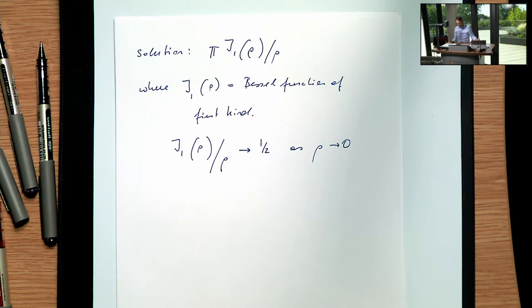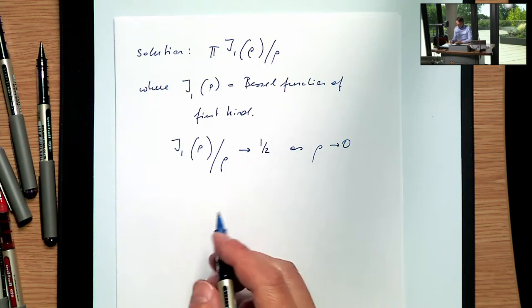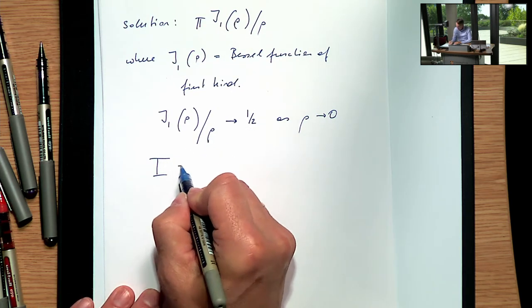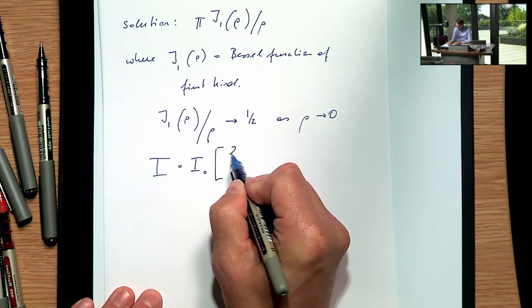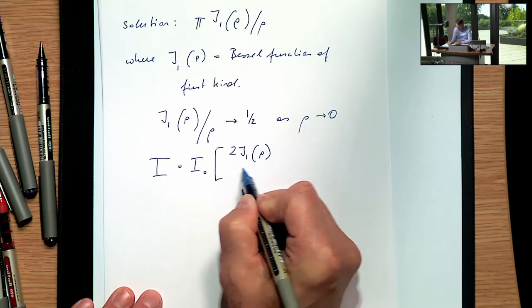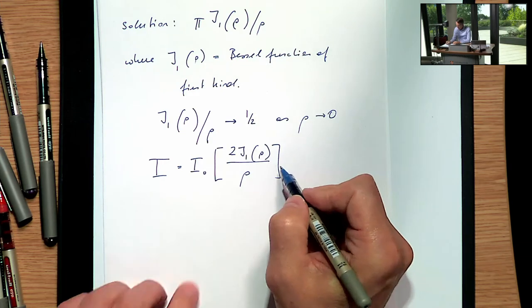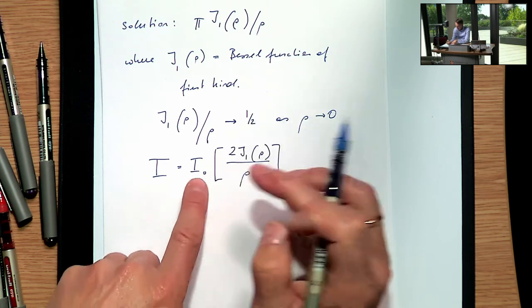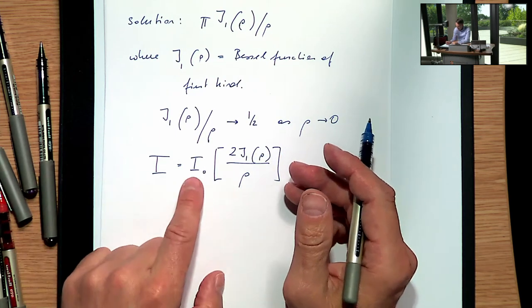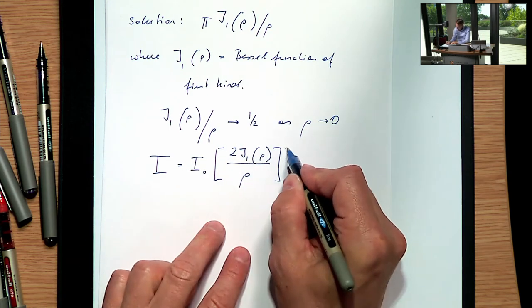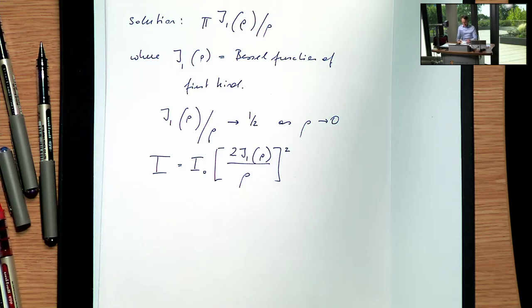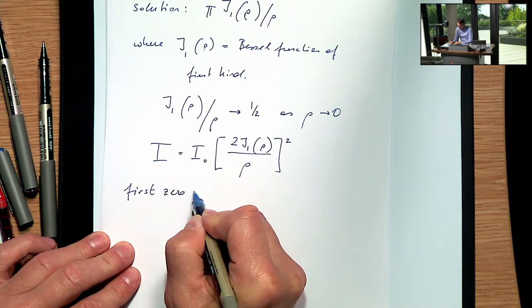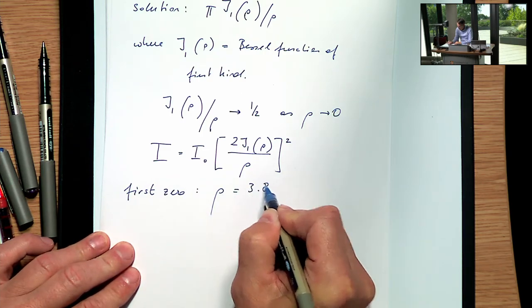Knowing this, the intensity — which is the square of the field — can be written as I = I₀ · [2·J₁(ρ)/ρ]², where the factor of 2 normalizes the central peak to one, and I₀ is the incoming intensity inside the aperture. The first zero of this function occurs at ρ = 3.832.